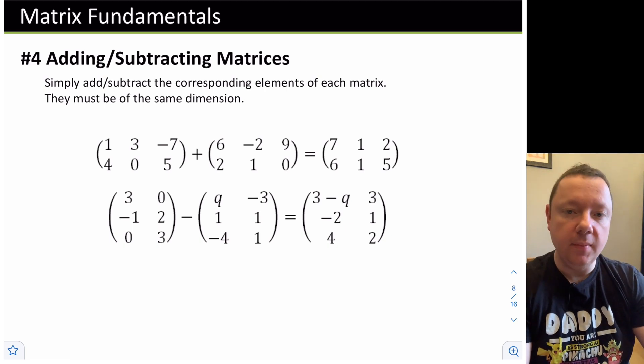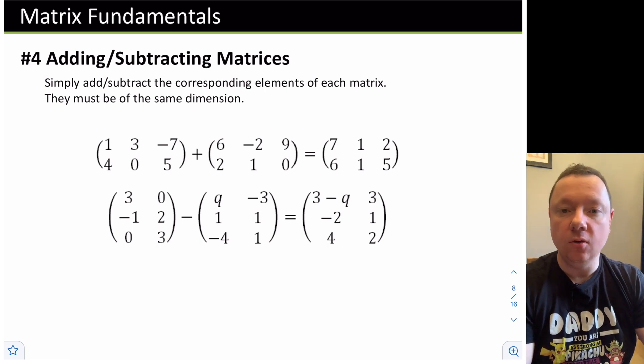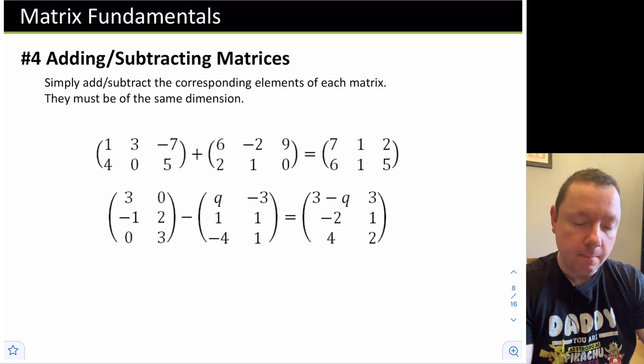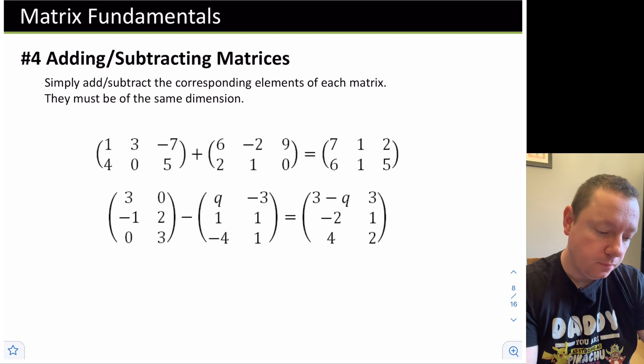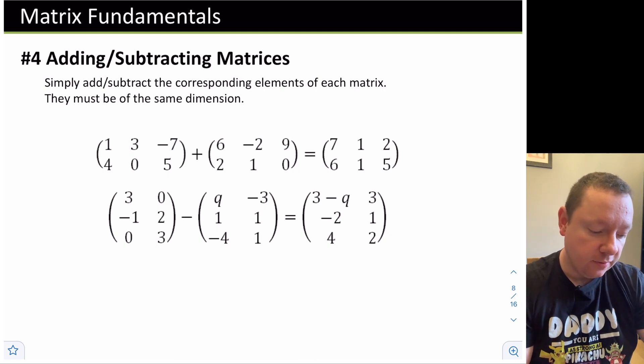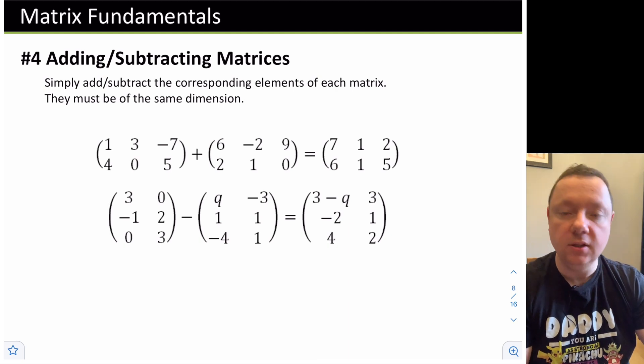Let's look at some fundamentals. Adding and subtracting matrices is really easy. You just add each individual element or subtract each individual element and get a new element for the matrix. The size of the matrix will be exactly the same as the one you started with. For instance, 1, 3, -7, 4, 0, 5, plus 6, -2, 9, 2, 1, 0. Well, we've got 1 plus 6 is 7, 3 plus -2 is 1, -7 plus 9 is 2, 4 plus 2 is 6, 0 plus 1 is 1, and 5 plus 0 is 5.